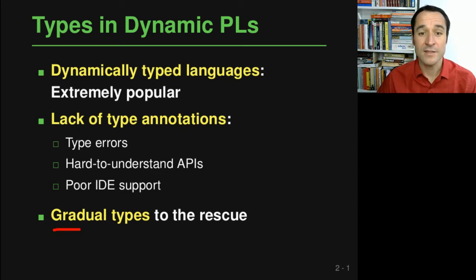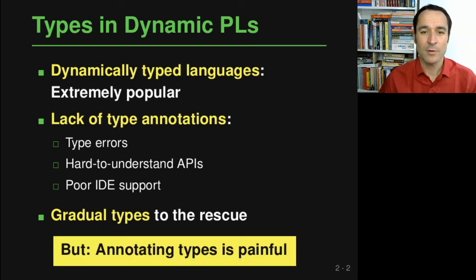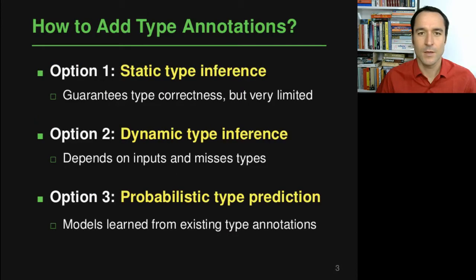Fortunately there's an idea called Gradual Types, which means you can add some type annotations to your program and then type checking will be done only on those added annotations. But someone still needs to add these annotations to an existing code base, and it turns out that programmers do not really like to spend a lot of time annotating types. So how can we automatically add types to an existing code base?